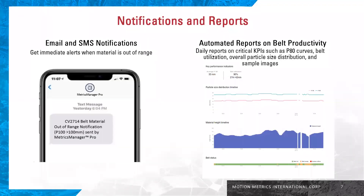Metrics Manager Pro will send email and SMS notifications when the material is out of range. An example of an SMS notification is shown below. Metrics Manager Pro shows that the P100, which is the largest particle size, is greater than 100mm. This SMS was sent to the operators and mine supervisors of the previous Pilbara example. They were able to take action, stop the conveyor belt, and discover that a screen was broken.